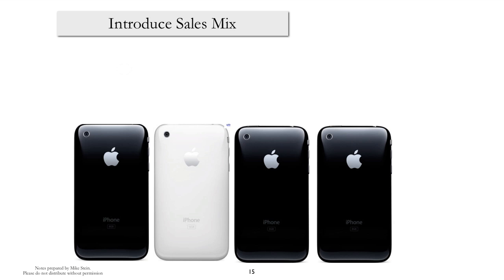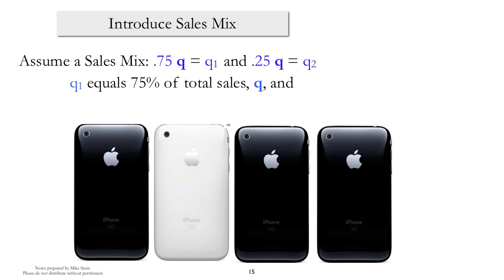Well, one way of doing it is to introduce the concept of sales mix. So suppose Apple believes that for each white iPhone it sells, it will sell three black iPhones, in which case we have a sales mix. And that sales mix can be interpreted the following way. That is, 75% of total iPhones are black, and 25% of total iPhones sold are white.